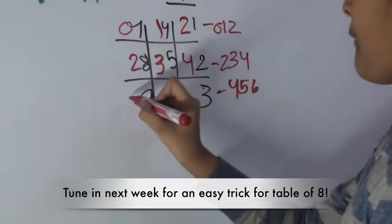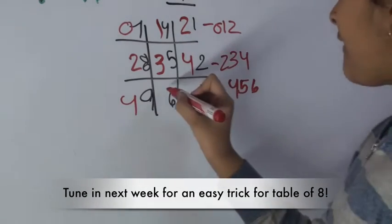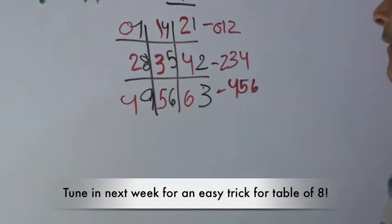On the last one, four in front of the nine, five in front of the six, and six in front of the three.